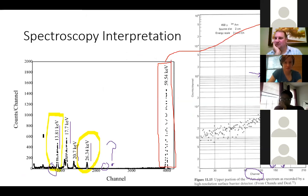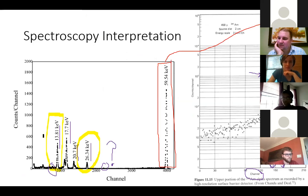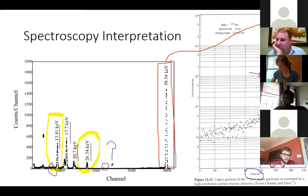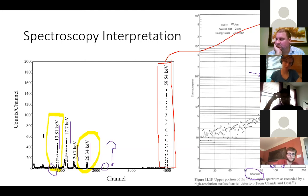Students ask whether the other low-energy peaks could be backscattering or annihilation peaks. The instructor says they could be backscatter or x-rays. A student mentions the annihilation peak at 511 keV, but the instructor clarifies that the 59.5 keV gamma does not have enough energy to produce pair production, so the annihilation peak is not relevant here.